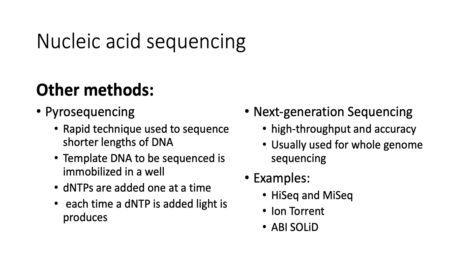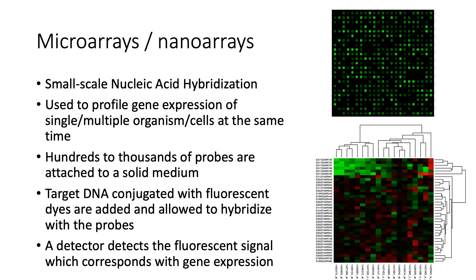We also have next-generation sequencing, which is a high-throughput, high-accuracy method usually used for whole genome sequencing. Examples include HiSeq, MiSeq, Ion Torrent, and ABI SOLiD. Next, let's tackle microarrays or nanoarrays. These are small-scale nucleic acid hybridizations used to profile the gene expression of single or multiple organisms or cells at the same time.